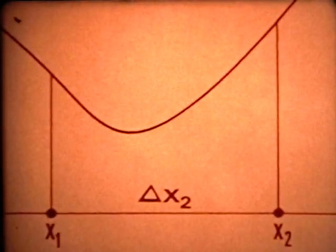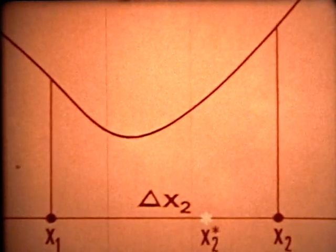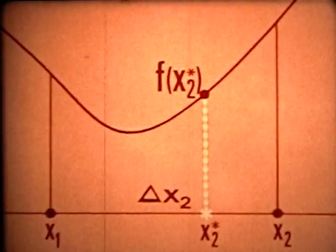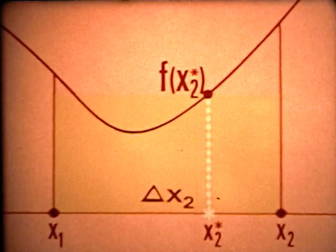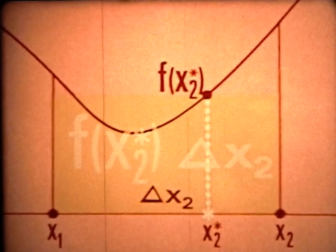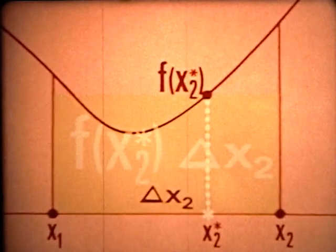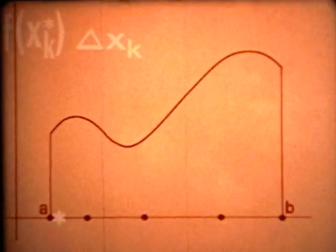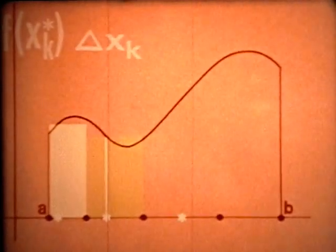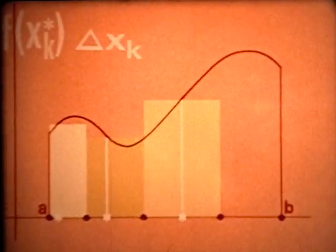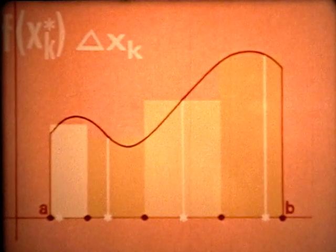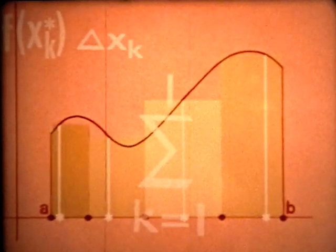Now on each subinterval, we pick a point and call it a star point. Taking the subinterval as the base and the function value at the star point as the height, we form a rectangle. Its area is an approximation to the area between the graph of F and the subinterval. Such a rectangle is formed on each subinterval.